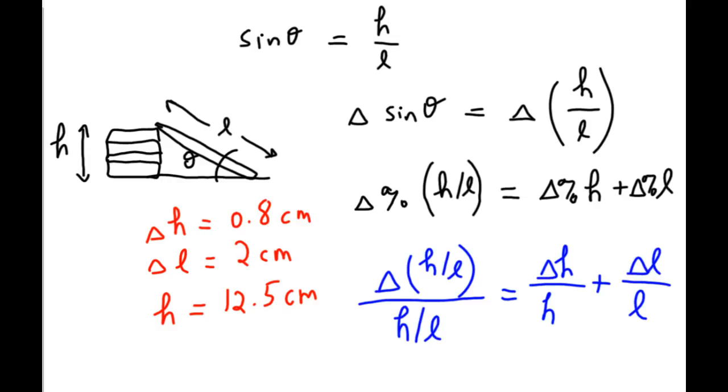And my value for L, I'm only rounding to the ones place, because the uncertainty in L is rounded to that same place. So, my value of L, let's say my length was 43 centimeters, that's what I measured.